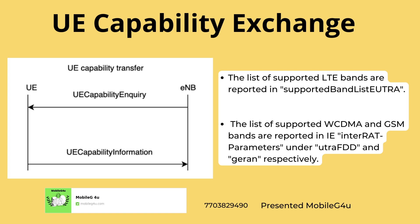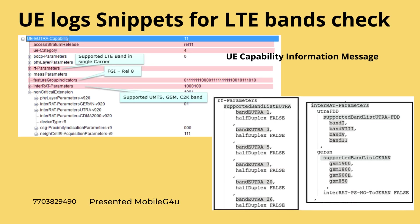You can see in the IE 'Supported Band List EUTRA' — inside this, all the supported LTE bands are listed. This is directly visible in the logs. WCDMA and GSM bands are reported in the inter-RAT parameters IE. For WCDMA, UTRA FDD, and GERAN respectively, you can see these in the logs.